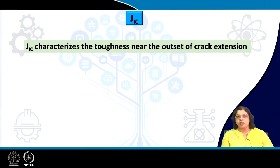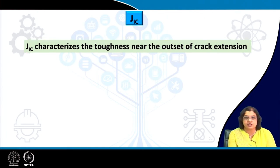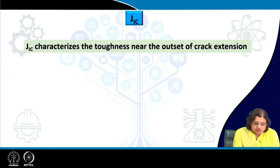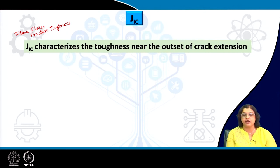J1C characterizes the toughness at the crack tip at the outset of crack extension. Similar to how K1C represents plane strain fracture toughness, J1C represents the plane strain fracture toughness in terms of J. The critical value of J integral at which fracture occurs is termed J1C — where C stands for critical, and 1 stands for mode I, the crack opening mode where loading is perpendicular to the crack.